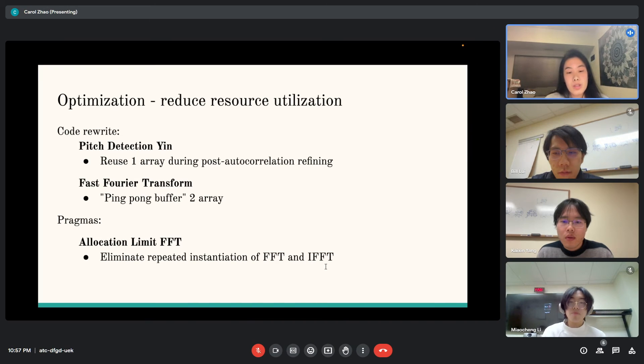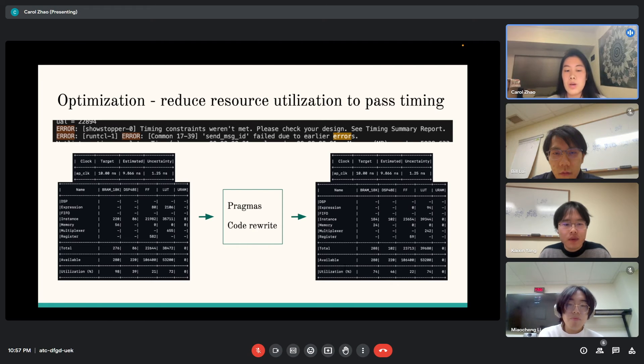With our functionally correct model, to optimize the design we first focused on reducing resource utilization. Some of the things we tried include rewriting the code for pitch detection and Fourier transforms to reuse large buffer arrays. We also used pragmas to eliminate repeated instantiation of Fourier transforms. The functionally correct model could not pass timing or generate bitstream. With the previously mentioned optimization steps, we were able to reduce the resource utilization, which helped the HLS tool in terms of getting the design to pass timing.